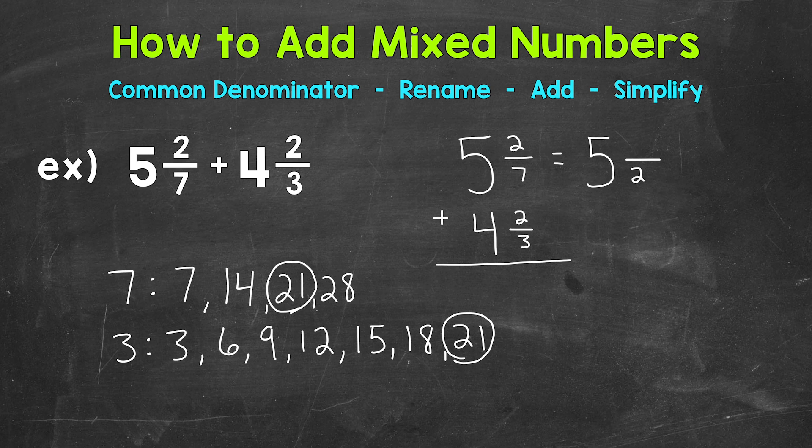So this is going to be 21. So let's use equivalent fractions to rename that 2 sevenths with a denominator of 21. So we need to think, how do we get 7 to equal 21? Well, 7 times 3 is 21. Whatever we do to the bottom, we must do to the top in order to keep this equivalent. 2 times 3 is 6.